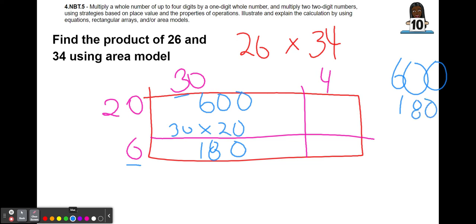Next, we're going to multiply 20 times 4. And we're going to do that by adding a zero at the end and multiplying 2 times 4 which is 8.